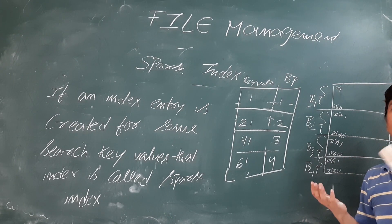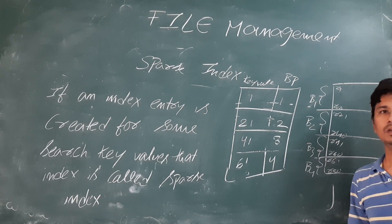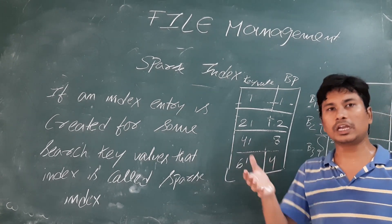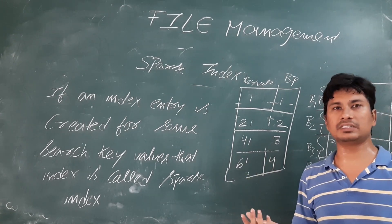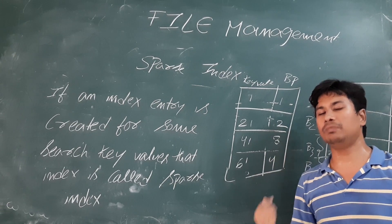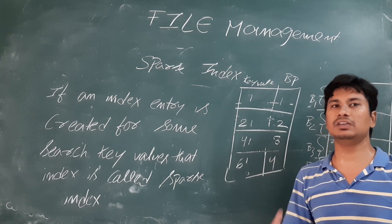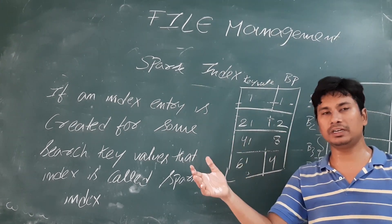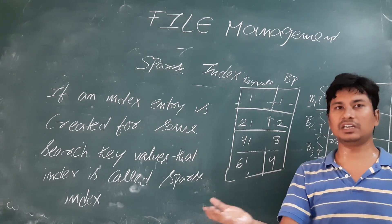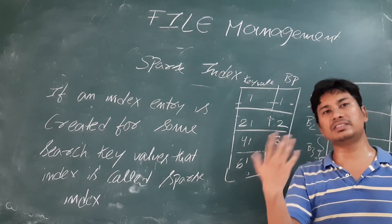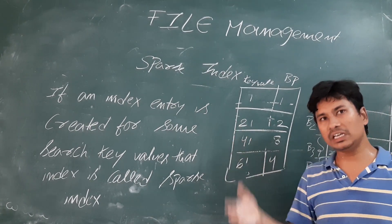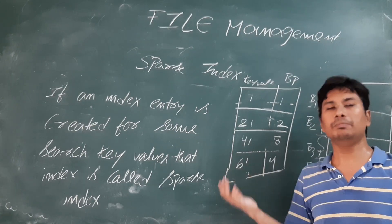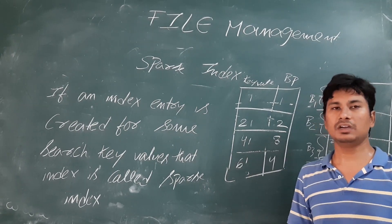In the next video we will discuss the types of indexing: single-level indexing and multi-level indexing. In single-level indexing we will cover primary indexing, clustering indexing, and secondary indexing. In multi-level indexing we will talk about B-trees and B+ trees. Thank you.